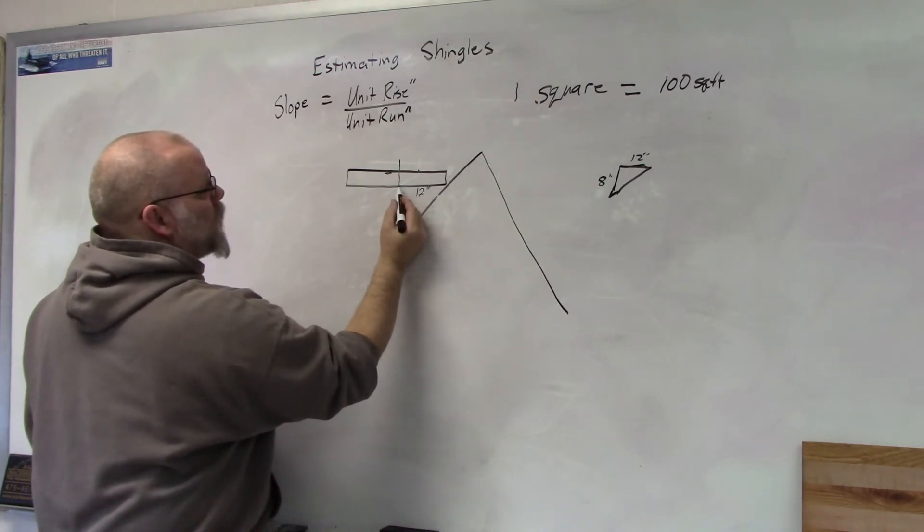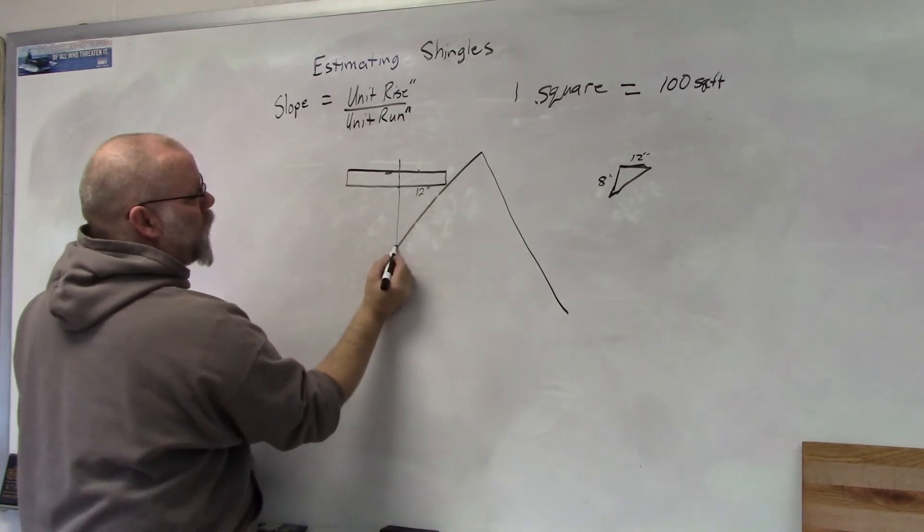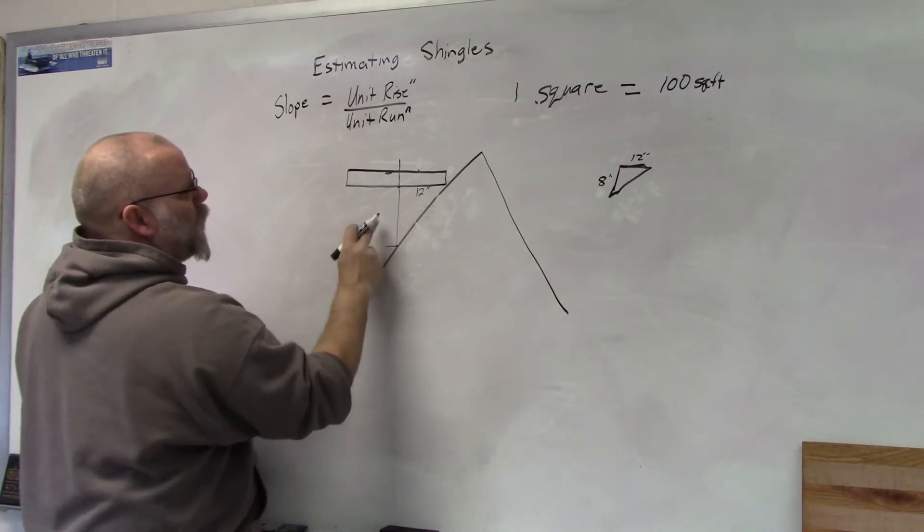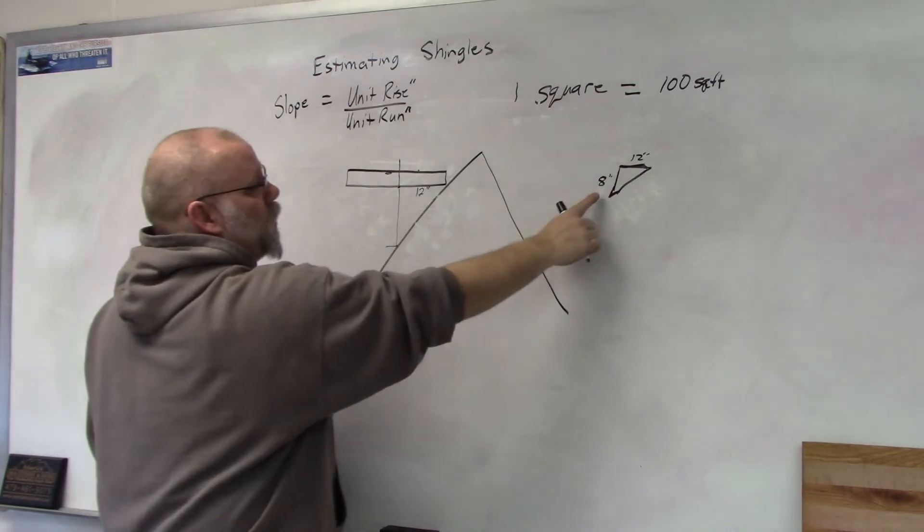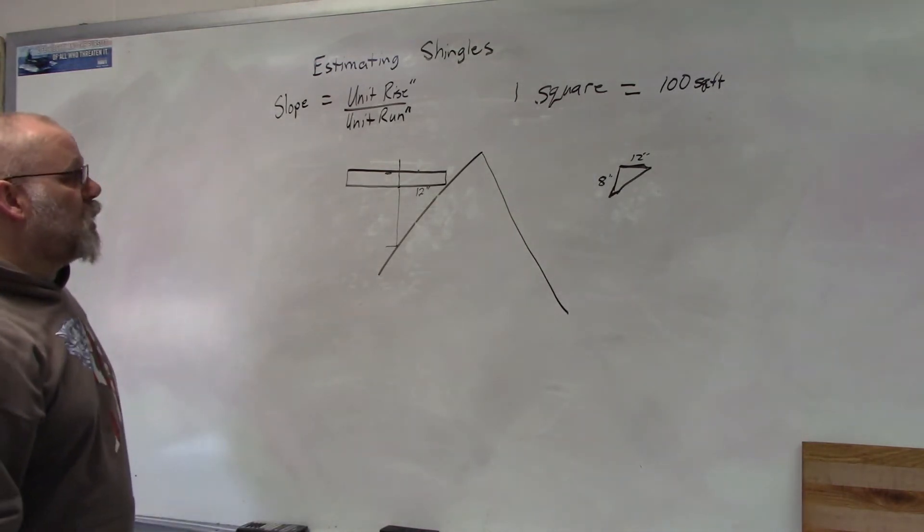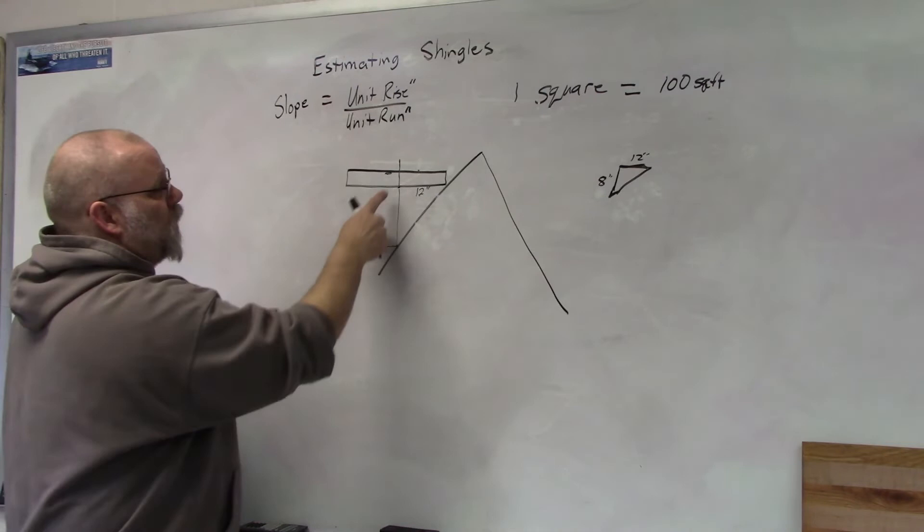Then you measure the distance from that point to this point, and whatever that is, that will be your slope. It's real easy to find - just a level and